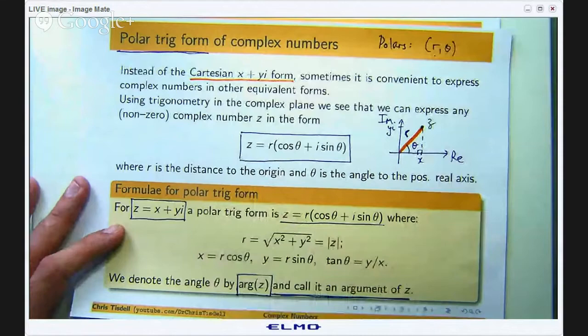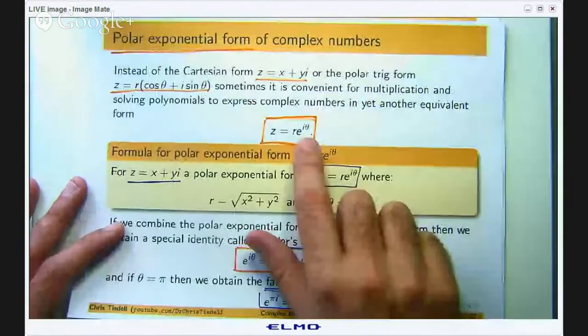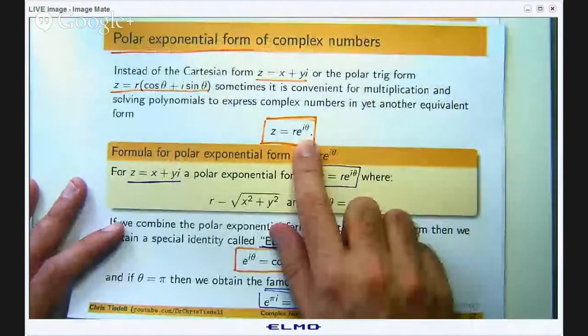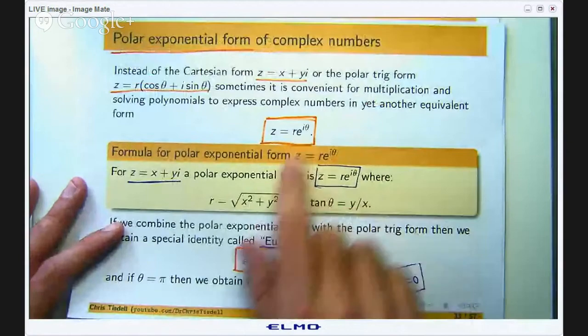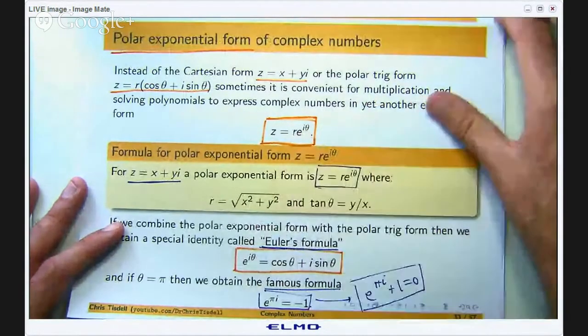And there is also the polar exponential form which is the form that we were given today. So you have got r e^(iθ) and basically the theta and the r are the same.